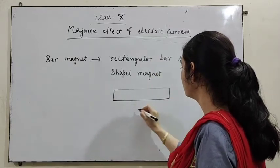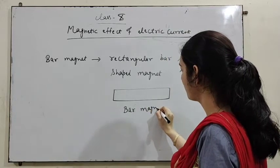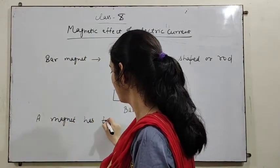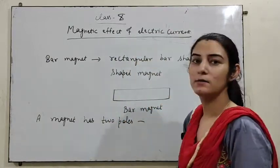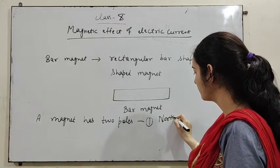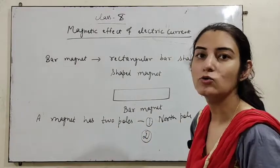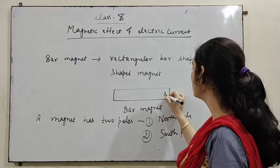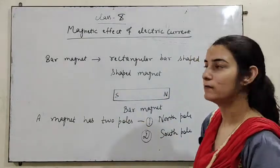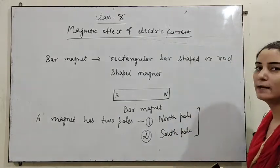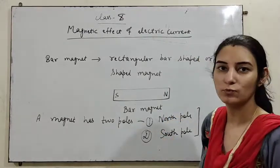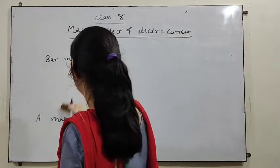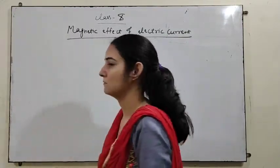This is the shape of a bar magnet. A magnet has two poles: number one, north pole, and number two, south pole. So in the case of a bar magnet, there is a north pole and a south pole. This is the necessary condition — the magnet has two poles, that is north pole and south pole.